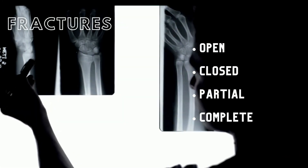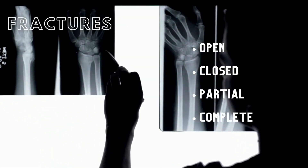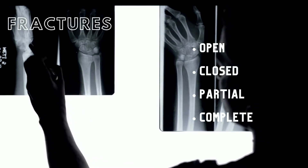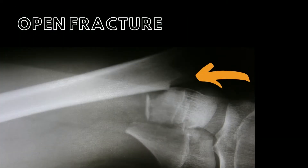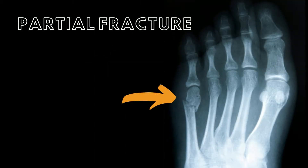Even though bones ossify, they still can break. There are four main types of fractures that you should know. An open fracture is when a bone breaks through the skin and can be seen outside the leg. A closed fracture does not break through the skin. A partial fracture is an incomplete break of the bone.